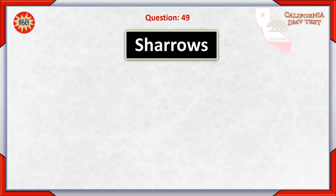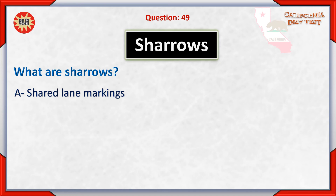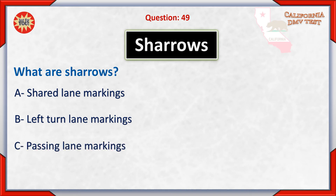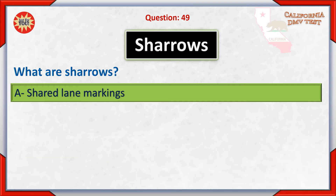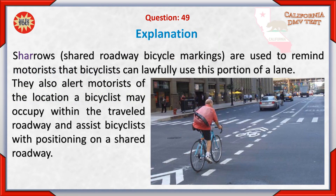Question 49. What are sharrows? A. Shared lane markings. B. Left turn lane markings. C. Passing lane markings. The correct answer is A — shared lane markings. They are used to remind motorists that bicyclists can lawfully use this portion of a lane, alert motorists of the location a bicyclist may occupy within the traveled roadway, and assist bicyclists with positioning on a shared roadway.